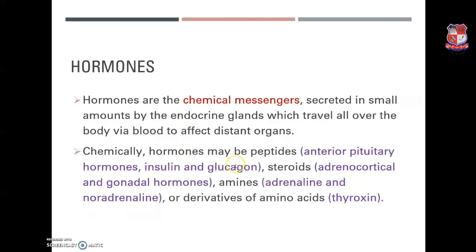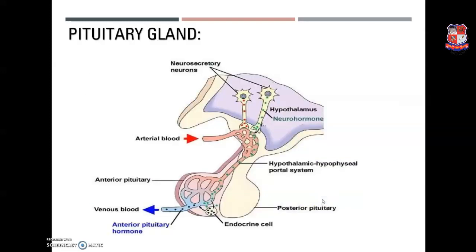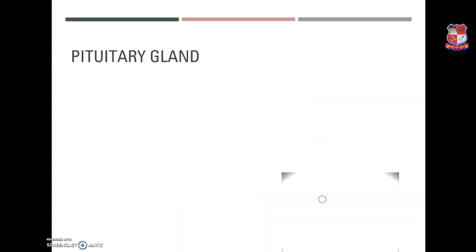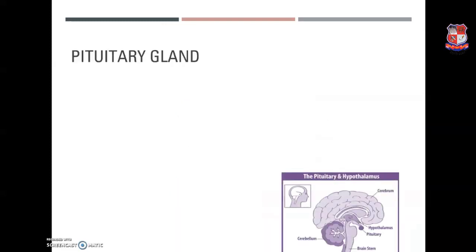Generally, hormones may be of any type — peptides, steroids, amines, or other derivatives of amino acids. Today we will cover the pituitary gland. The pituitary gland is also known as the hypophysis cerebri, or the master gland, because it secretes hormones that control other endocrine glands.